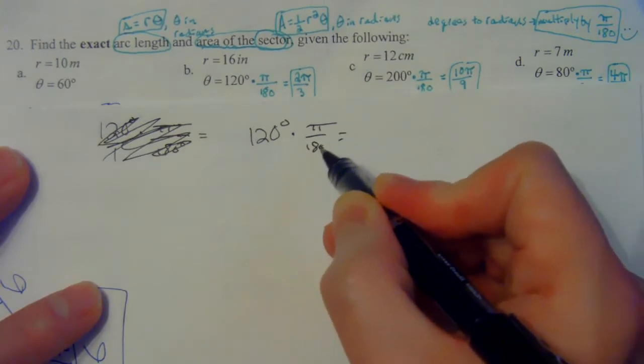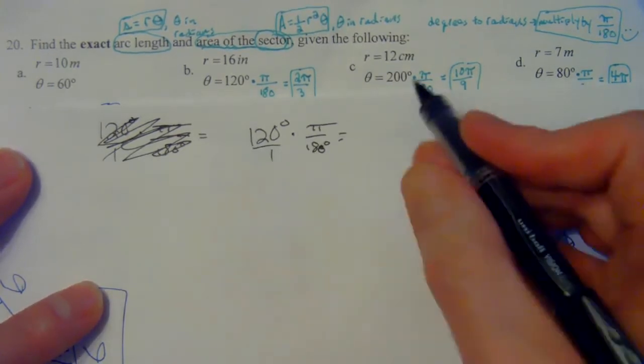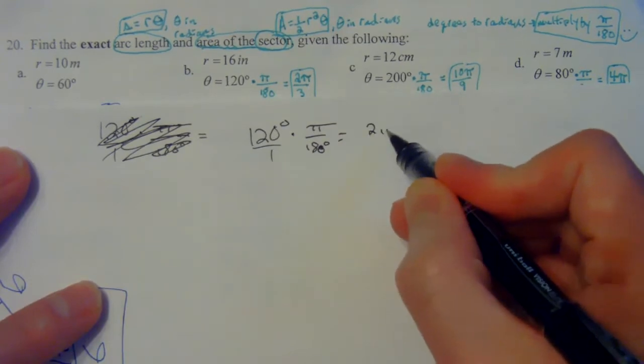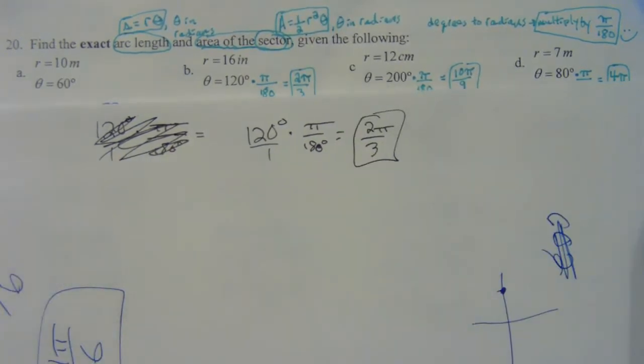120 over 180 reduces to two-thirds, so this would be two pi over three radians, and we got to get this exact answer. So if I'm going to do arc length,